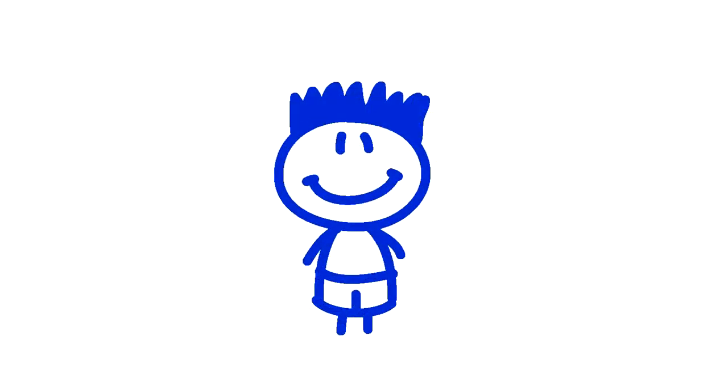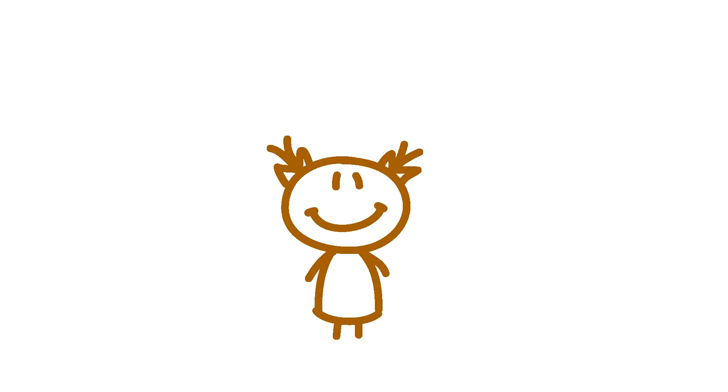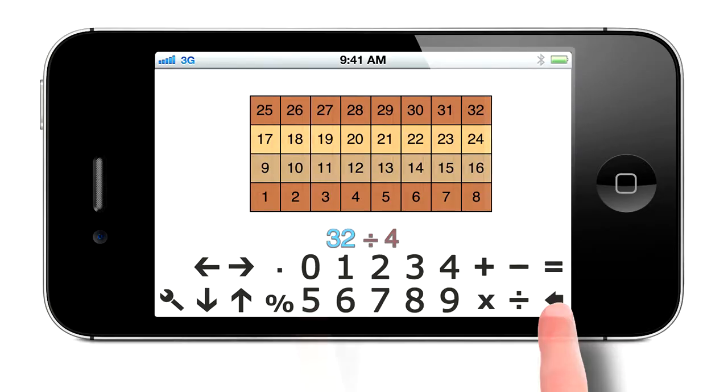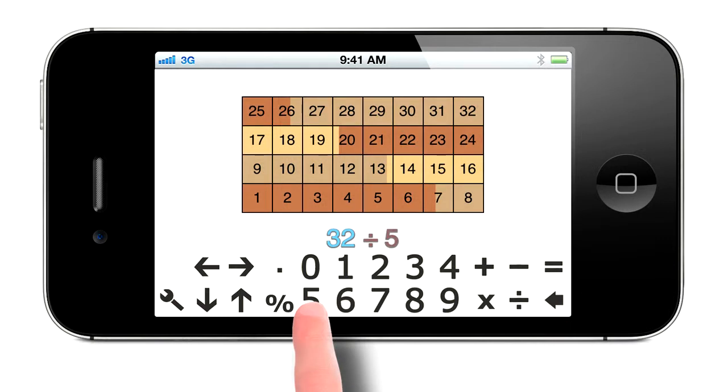And then Isaac says, what about 5? What happens if we divide it by 5? So I say, I don't know. Why don't you try it? And they say, really? You don't know? I'll help you, says Helen. Thank you so much, I say. And she deletes the 4 and divides 32 by 5.